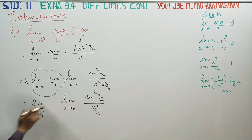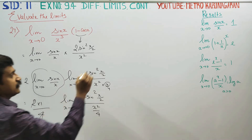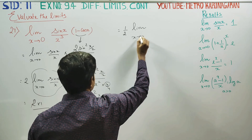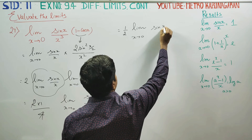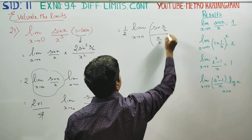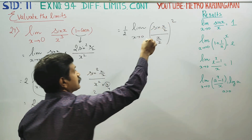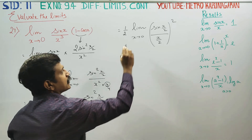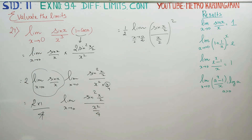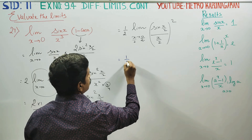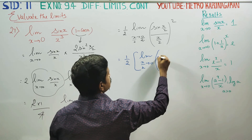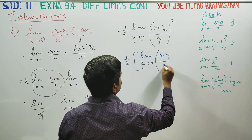Divide by 4. This will cancel. You will get 1 by 2. One half limit. Limit x turns to 0 — looking at sin x by 2 divided by x squared by 4, it is equal to x by 2 whole square. This square is equal to sin squared and this square is equal to x squared by 4. Divide by 2 on both sides, so x by 2 turns to 0 by 2. The limit is equal to the whole square.